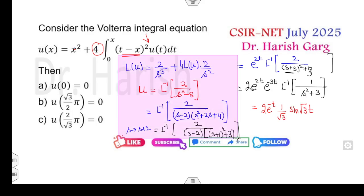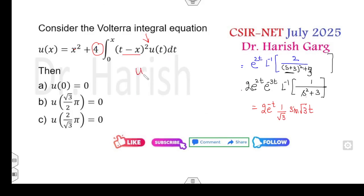Therefore, your final solution of this problem will be 2 e raised to power minus t divided by root 3 sine root 3 into t. Or because the function is in terms of x, you can write all those Laplace in terms of x.